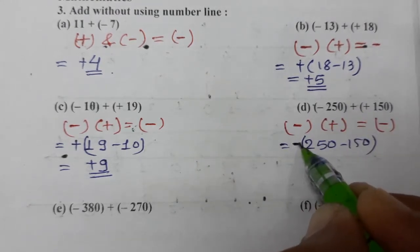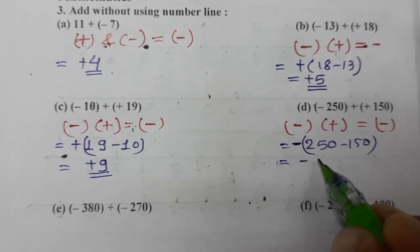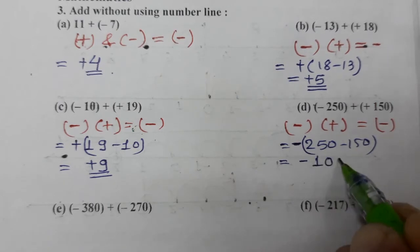Subtract. Now which sign is bigger? Minus one is bigger, so put minus. Don't forget this minus. 250 minus 150, it is 100. So minus 100 is the answer.